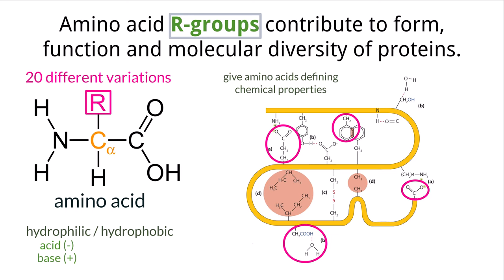You do not need to know any specific examples or R group structures for the exam, but you do need to understand that R groups are the parts of amino acids that make the molecules chemically diverse and heavily influence how it functions and interacts with other molecules.